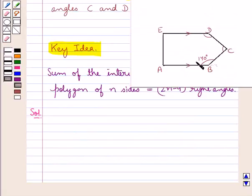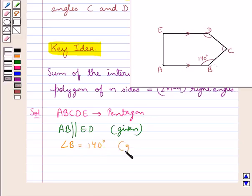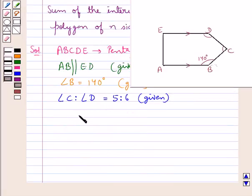This is the pentagon ABCDE. We are given that AB is parallel to ED and we are also given that angle B is equal to 140 degrees. Also, we are given the ratio of angle C to angle D, that is angle C to angle D is equal to 5 to 6, and we are supposed to find the interior angles C and D.